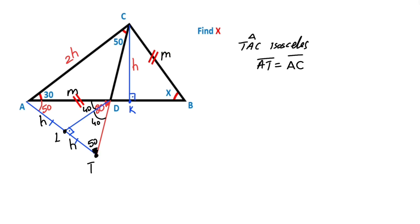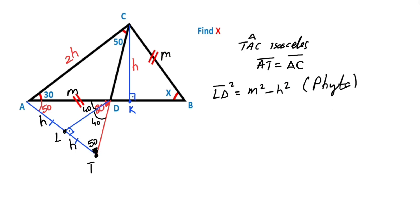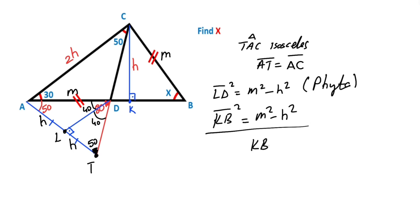Let's call this point L. If we apply the Pythagorean theorem for triangle ALD, we get the length of LD. So LD squared equals m squared minus h squared, according to the Pythagorean theorem. Then for the other triangle, applying the Pythagorean theorem again: KB squared equals m squared minus h squared. That means KB must equal LD.